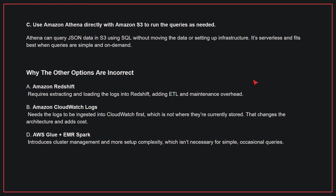Why the other options are incorrect: A — Amazon Redshift requires extracting and loading the logs into Redshift, adding ETL and maintenance overhead. B — Amazon CloudWatch Logs needs the logs to be ingested into CloudWatch first, which is not where they're currently stored — that changes the architecture and adds cost. D — AWS Glue plus EMR Spark introduces cluster management and more setup complexity, which isn't necessary for simple, occasional queries. Therefore, the correct answer is C.